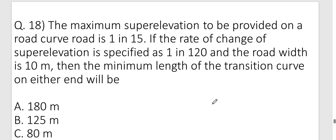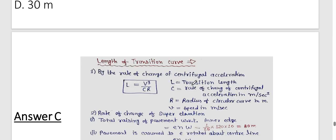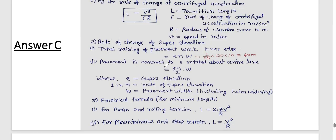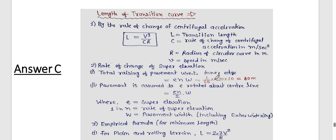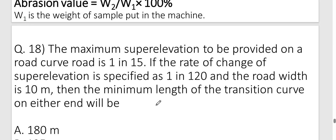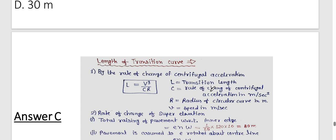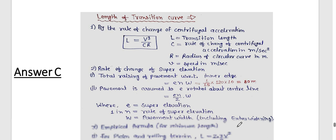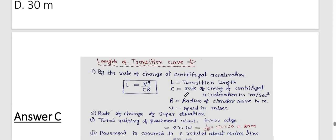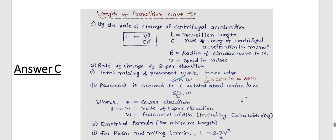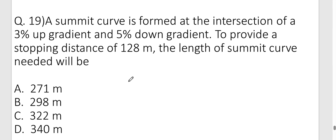Question seventeen (numerical): Maximum super elevation on road curve is 1 in 15, rate of change of super elevation and road width are given. Using the formula L = e × N × W (super elevation × gradient factor × width), where width = 10 m, the minimum length of transition curve = super elevation × n × W = 80 m. Answer is option C.